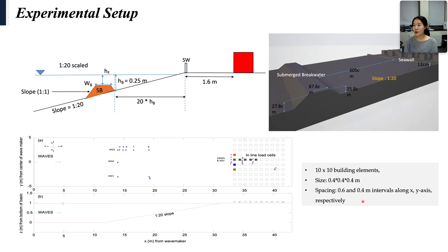Including wire resistance wave gauges, ADVs, and ultrasonic wave gauges. Also, 100 idealized structures representing a coastal urban array were positioned on the bathymetry. Each structure has 40 cm dimensions in the longshore and crossshore directions.